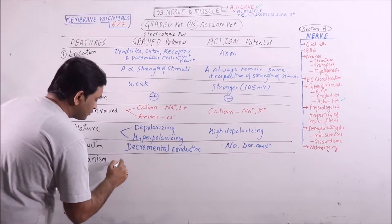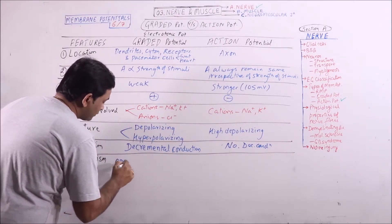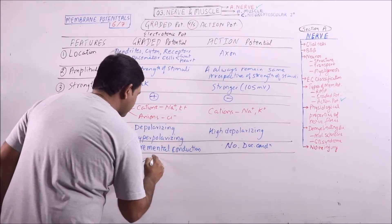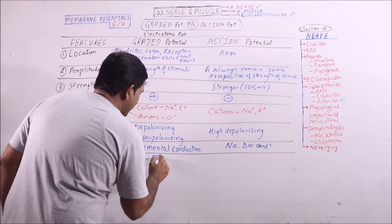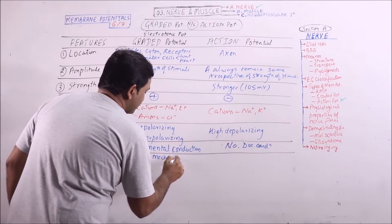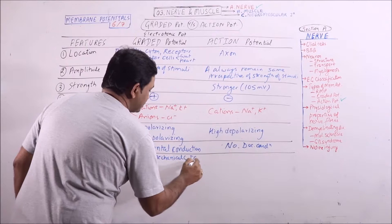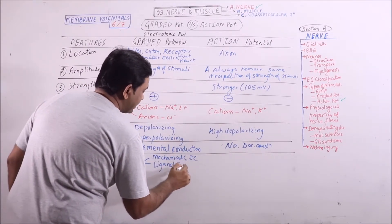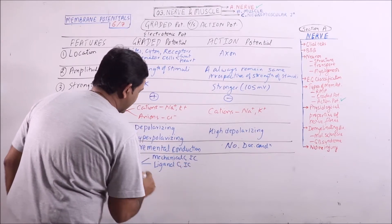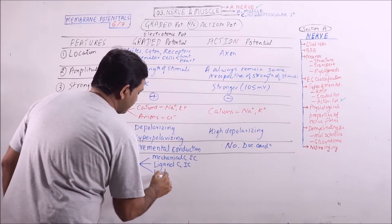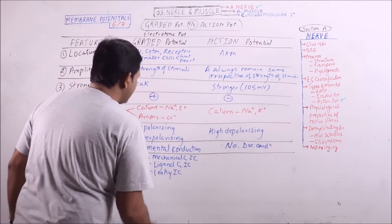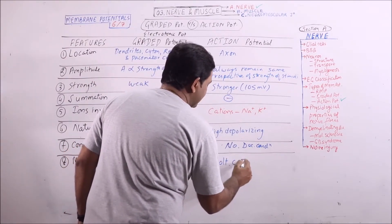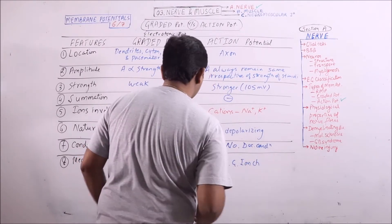Mechanism involved during production or development of graded potential involves opening of mechanical gated ion channels or ligand gated ion channels, and even some leaky ion channels may be involved. In action potential, voltage gated ion channels are always involved.